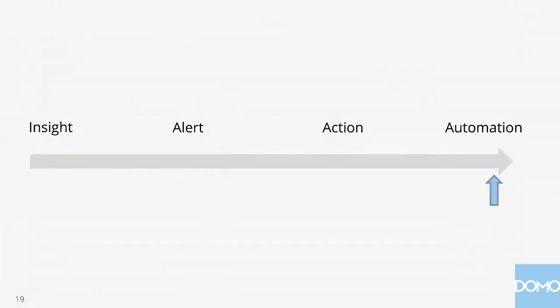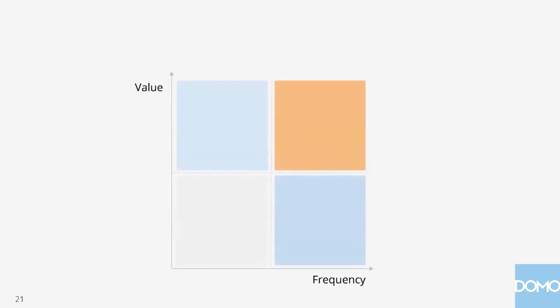If you think about all your use cases, they're going to fall somewhere on this continuum based on how mature the use case is, how high-value it is to the company, and how frequently it's a problem. The conundrum I've seen our customers find themselves in is: which use cases are best candidates for new tools like this, and where do I start? I want to introduce you to a matrix. On the y-axis we have value, and on the x-axis we have frequency. Plot your use cases out on here.